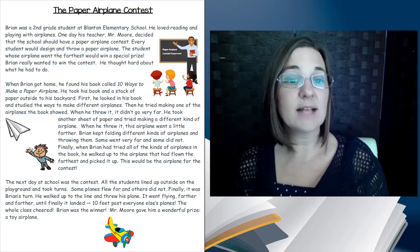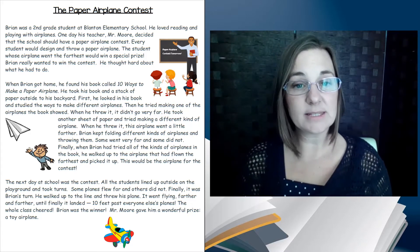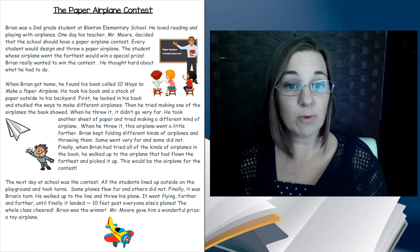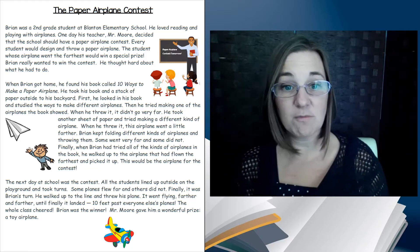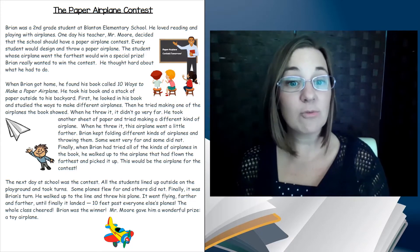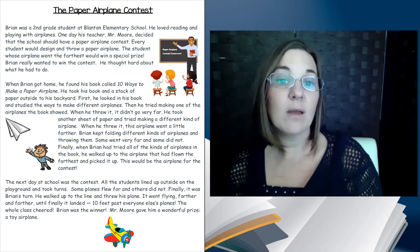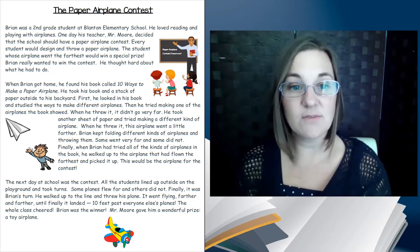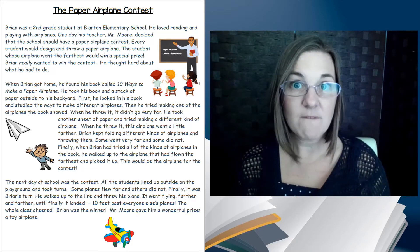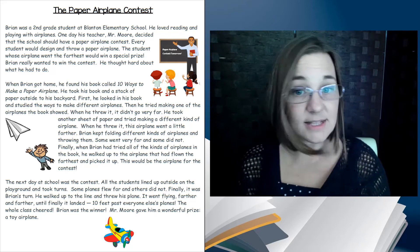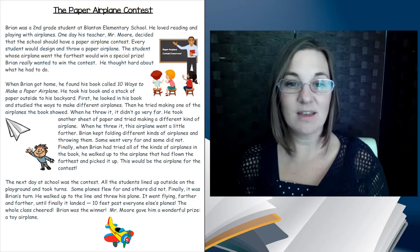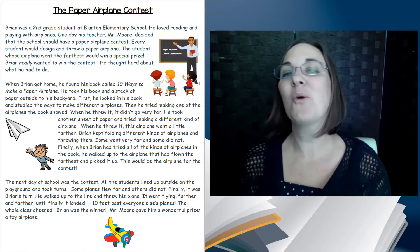First, he looked in his book and studied the ways to make different airplanes. Then he tried making one of the airplanes the book showed. When he threw it, it didn't go very far. He took another sheet of paper and tried making a different kind of airplane. When he threw it, the airplane went a little farther. Brian kept folding different kinds of airplanes and throwing them. Some went very far and some did not. Finally, when Brian had tried all the kinds of airplanes in the book, he walked up to the one that had flown the farthest and picked it up. This would be the airplane for the contest.